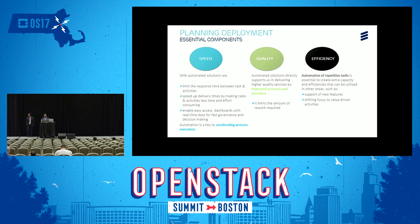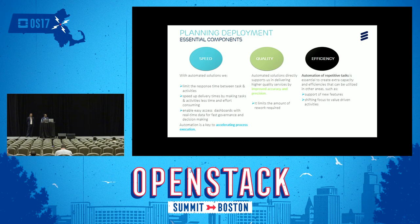Automation speeds up delivery by making tasks and activities consume less time with lesser effort. It enables easy access to our dashboard with real-time data for fast governance and decision-making. Automation directly supports delivery with high-quality services with higher precision and accuracy. With automation, we can limit rework compared to manual deployments, and it can adapt to new features easily, allowing us to shift focus to value-driven activities. Thus, automation is key to accelerating process execution.